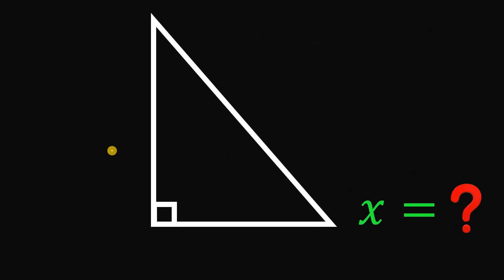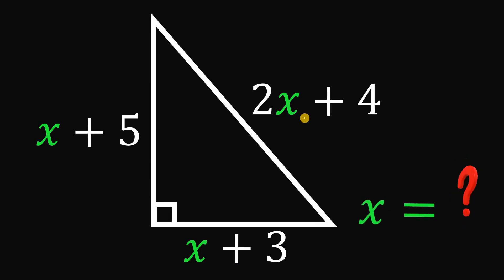Let's start with a right triangle with a sideline of x plus 5, x plus 3, and 2x plus 4. Then our goal in this question is to find the value of x.